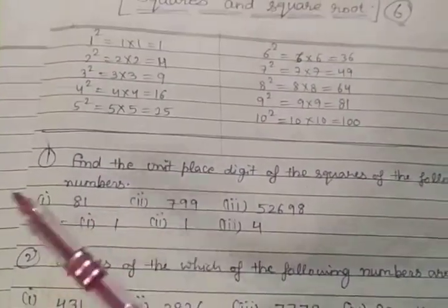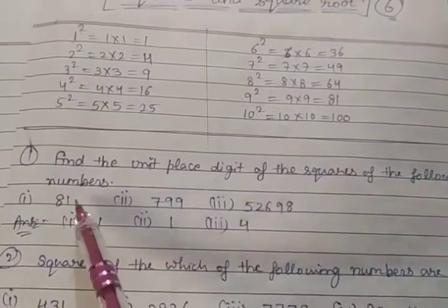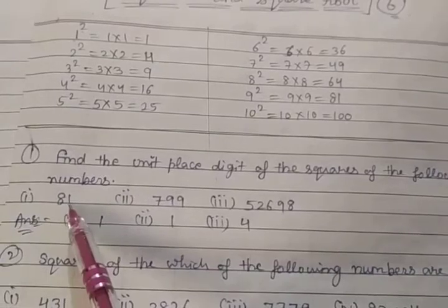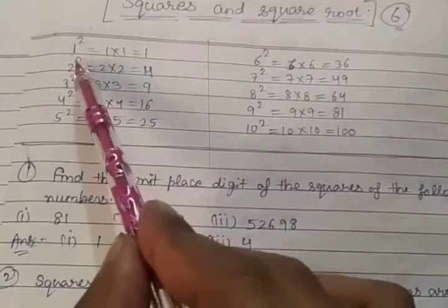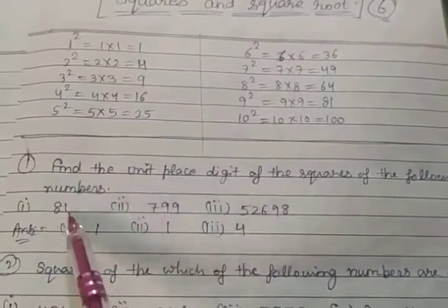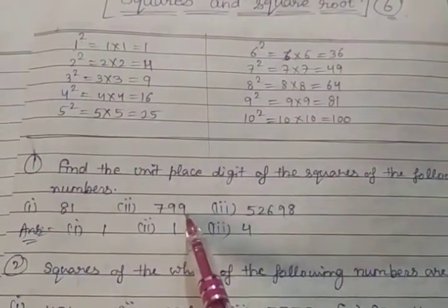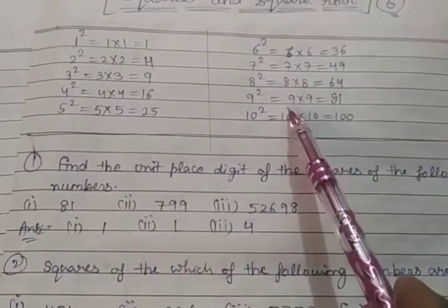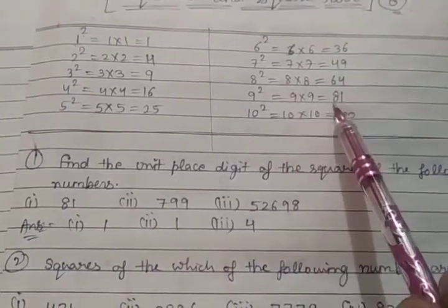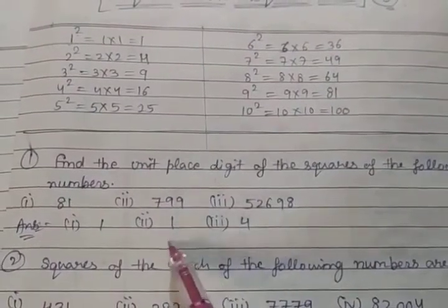We will only look at the unit place digit. We will multiply the unit digit by itself. For 1, 1 times 1 equals 1. We will multiply 9. We will multiply 1.